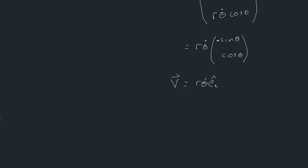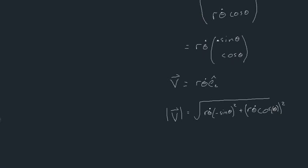We can also calculate the magnitude of our velocity vector: it's the square root of (r·θ̇·minus sinθ)² plus (r·θ̇·cosθ)². Since sin²θ plus cos²θ equals one, this simplifies to r·θ̇. So the magnitude of our velocity will always equal r·θ̇ — a huge formula in circular motion.